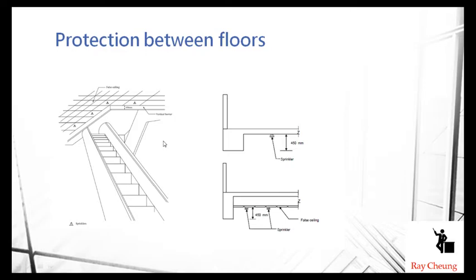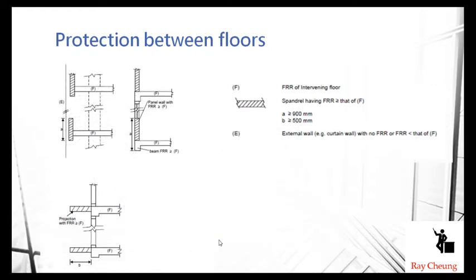In order to reduce the chance of fire spreading to the upper floor, you need to protect the floor-to-floor junction. You may need a vertical barrier of not less than 450 millimeters to reduce the chance of fire traveling upward. If the spandrel is more than 450 millimeters, you also need to provide a spandrel panel to protect against fire spread. You can also provide a 900 millimeter or 500 millimeter projection to prevent fire from going from the lower floor to the upper floor. This is the basic requirement. Thank you.